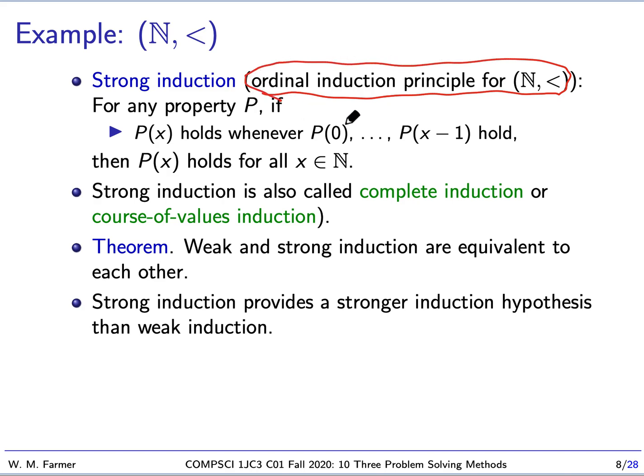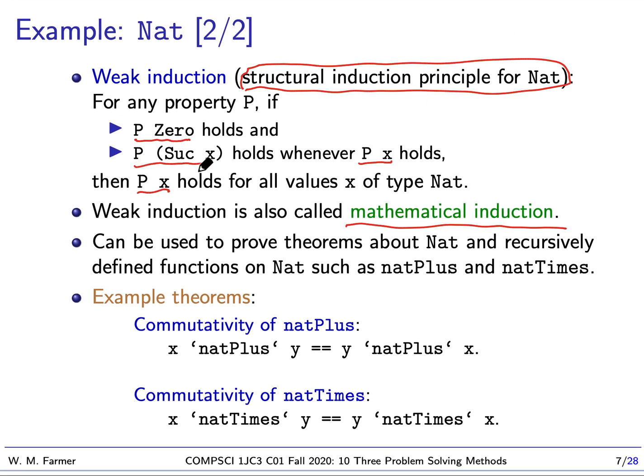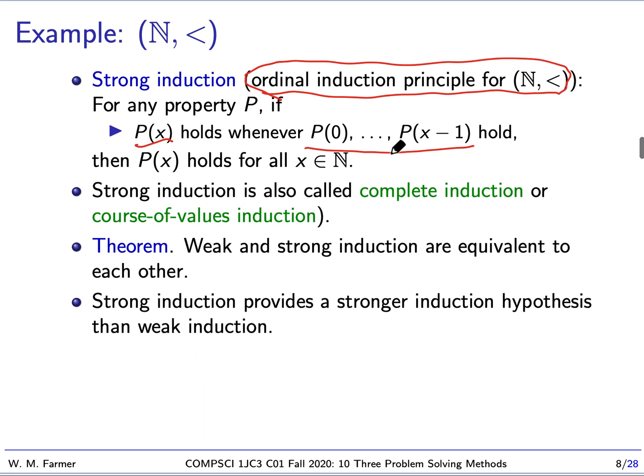This is the ordinal induction principle, which is called strong induction. It's a little different. It says for any property, if we can show P(x) holds whenever P(0), P(1), P(2), up to P(x-1) hold, then P(x) holds for all N. Notice here, we have to show P(x), and we can assume that P holds for everything less than that. This is different than weak induction, because with weak induction we have to show that P of the successor of X holds, and we only use the fact that P of X holds. With weak induction, we also have to show that it holds at zero. Notice that if X is zero in this case, there's nothing less than that. So built into strong induction is showing that the property holds at zero.